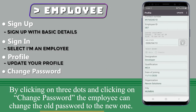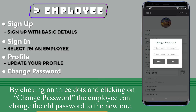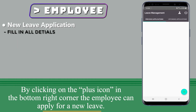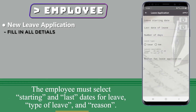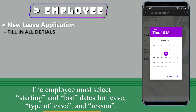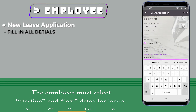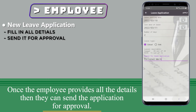By clicking on the three dots and selecting change password, the employee can change the old password to a new one. By clicking on the plus sign in the bottom right corner, the employee can apply for a new leave. The employee must select starting and last dates for leave, type of leave, and reason. Once all the details are provided, they can send the application for approval.